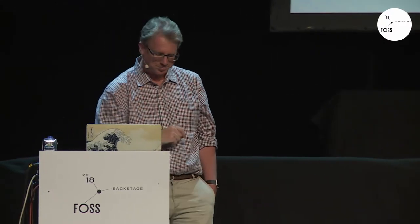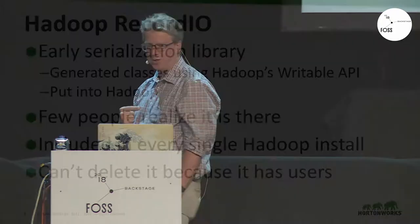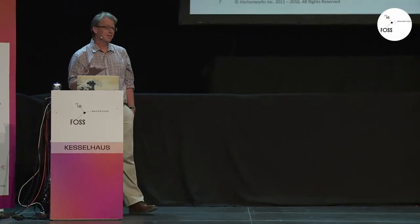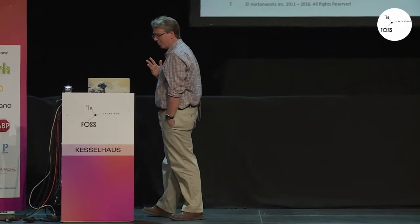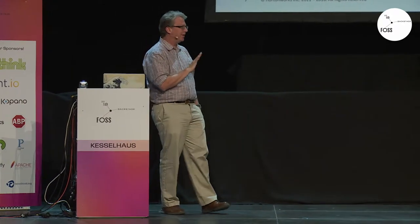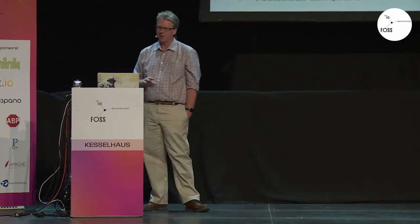One example of this was a little project called Hadoop Record I/O — an early serialization library that implemented Hadoop's Writable class for you. It was put into Hadoop and no one ever made very much noise about it. So basically everyone has it, almost no one knows it's there, it's been deprecated for many years, but we can't delete it. When we tried, some users started screaming — they use it in production and all their data is written in it.